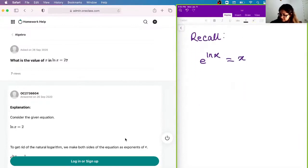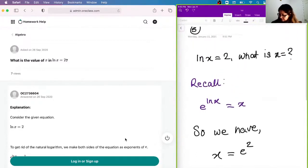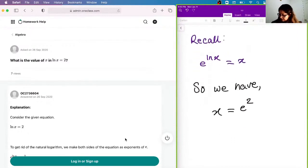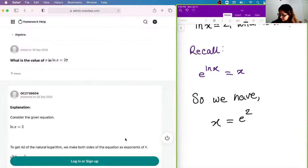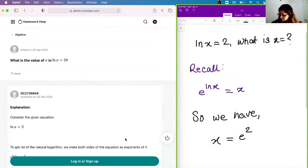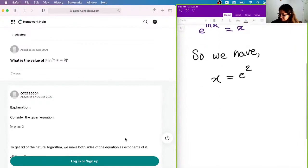So what we can do is, we have x equals to e to the power of 2. We know that x is equal to e to the power of ln of x, and this ln of x is equal to 2, right? So, x is equal to e to the power of ln of x, which is equal to 2. So we just substitute that in.